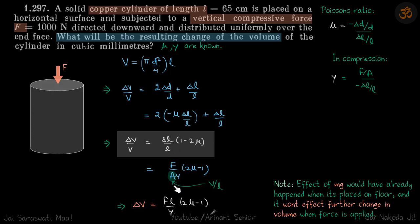δL/L we write as F upon AY with a minus sign. The minus sign will go inside and this becomes 2μ minus 1. Area is also not given, so we will write area as V by L so that V can get cancelled. We get our answer: δV equals FL/Y times (2μ minus 1).